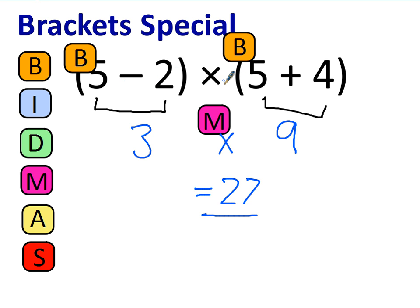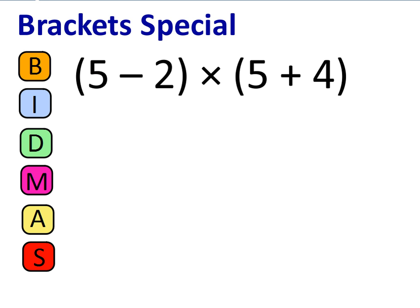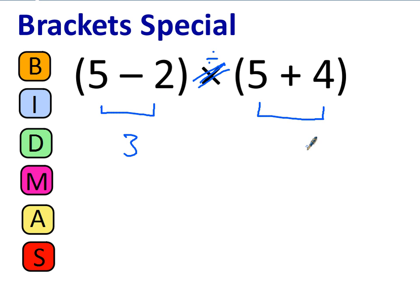Just work out each bracket separately and then do the thing that's happening in the middle. Now, what would happen if instead of being a multiplication here, this had been a division? Not that much would have changed really: 5 take away 2 is 3. We'll need to do the other brackets before we do the division. 5 plus 4 is 9. So you need to do 3 divided by 9, which can be written as a fraction and simplified to 1 third.